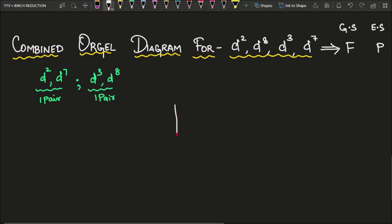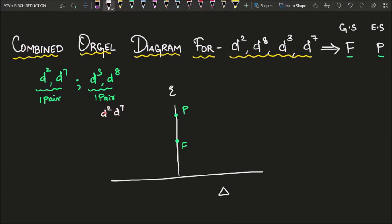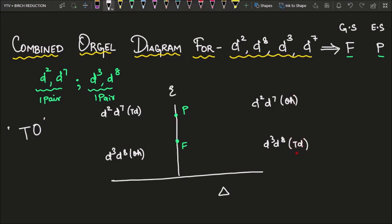In this graph the x-axis is delta (ligand field strength) and the y-axis is energy. There are two spectroscopic terms on the energy axis: F (ground state) at the bottom, and P (excited state) at the top since its energy is higher. Write the pairs in numerical order — D2/D7 first, then D3/D8 — and again use the word 'two' to remember: T (tetrahedral) on the left, O (octahedral) on the right, diagonally opposite.